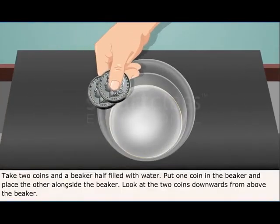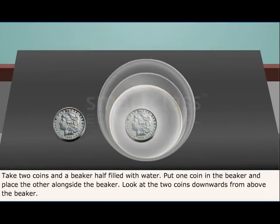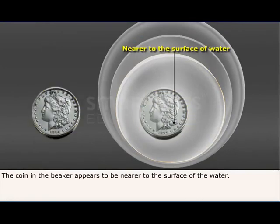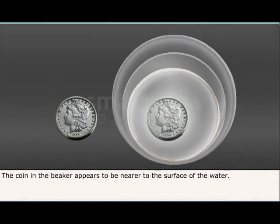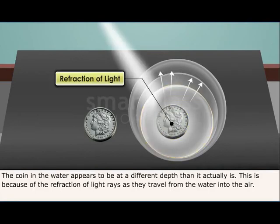Take two coins and a beaker half filled with water. Put one coin in the beaker and place the other alongside the beaker. Now look at the two coins downwards from above the beaker. The coin in the beaker appears to be nearer to the surface of the water. The coin in the beaker appears to be at a different depth than it actually is because of the refraction of light rays as they travel from the water into the air.